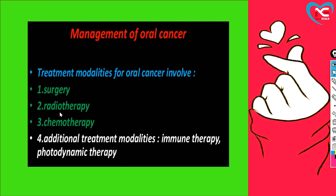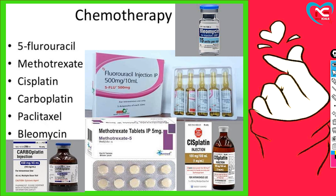Now we move to management. First, chemotherapy: six drugs are mainly used. 5-fluorouracil is an anti-cancer drug — it prevents the formation of pre-RNA. Before main RNA forms, pre-RNA is built first (similarly pre-DNA before main DNA). 5-fluorouracil blocks the formation of pre-RNA and pre-DNA in cancer cells, preventing them from replicating.